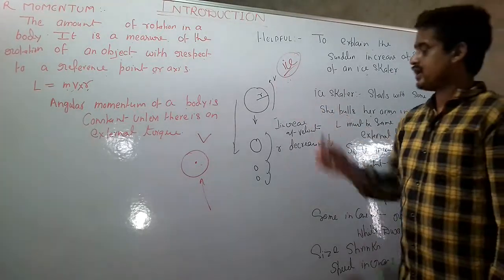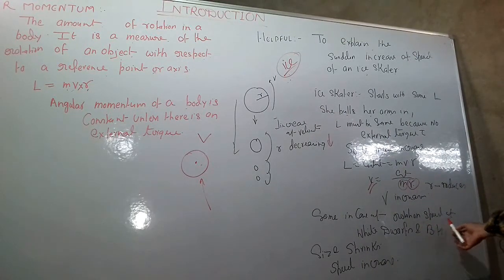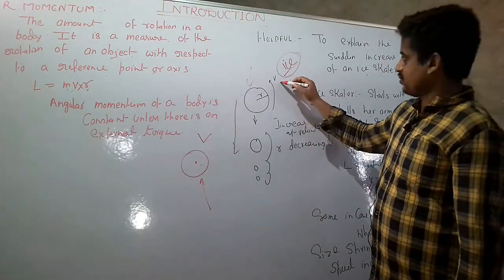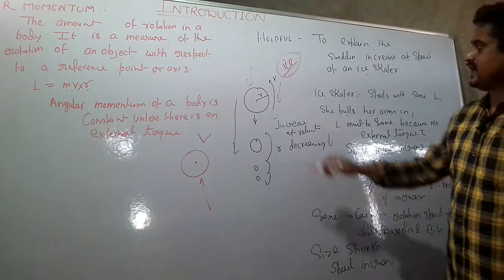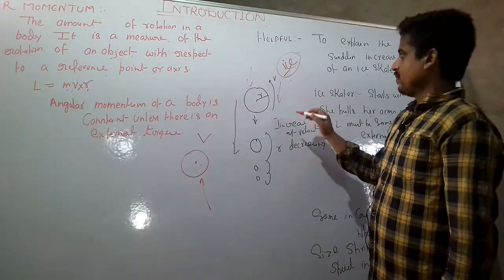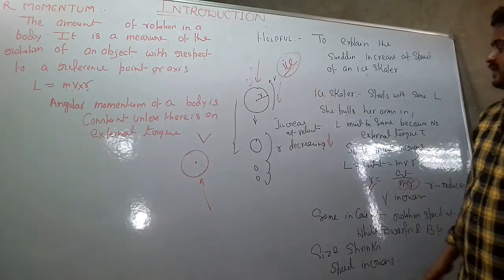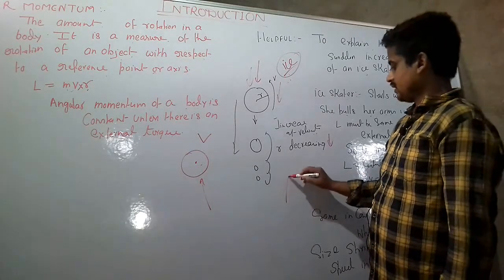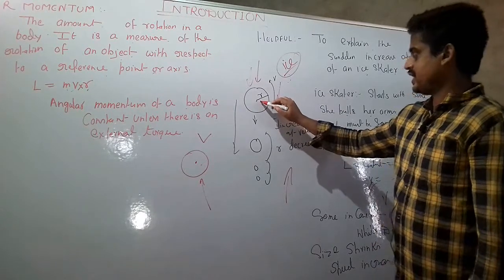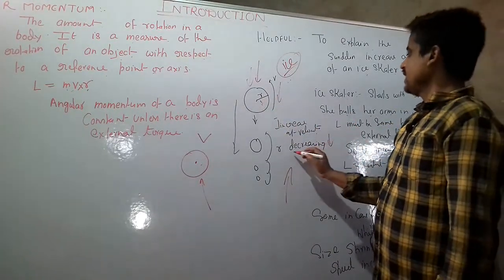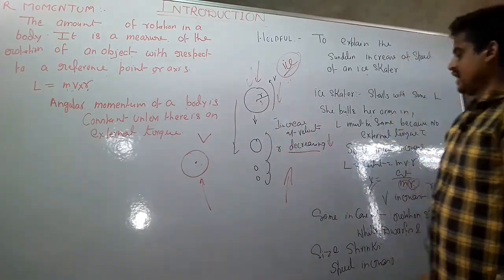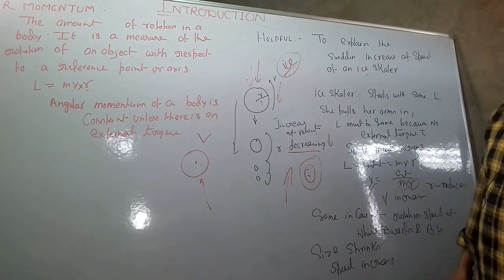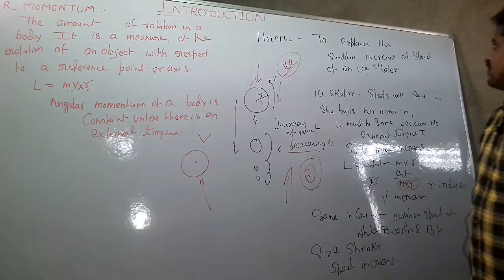Angular momentum also explains the increase in rotating speed of white dwarfs and black holes. A black hole is a collapsing star, and as it collapses around its center there is a decrease in its radius. Due to conservation of angular momentum, there is a corresponding increase in rotational velocity. The faster a star collapses around its axis, the greater its rotating speed — that is why neutron stars rotate around their axes with enormous speed.